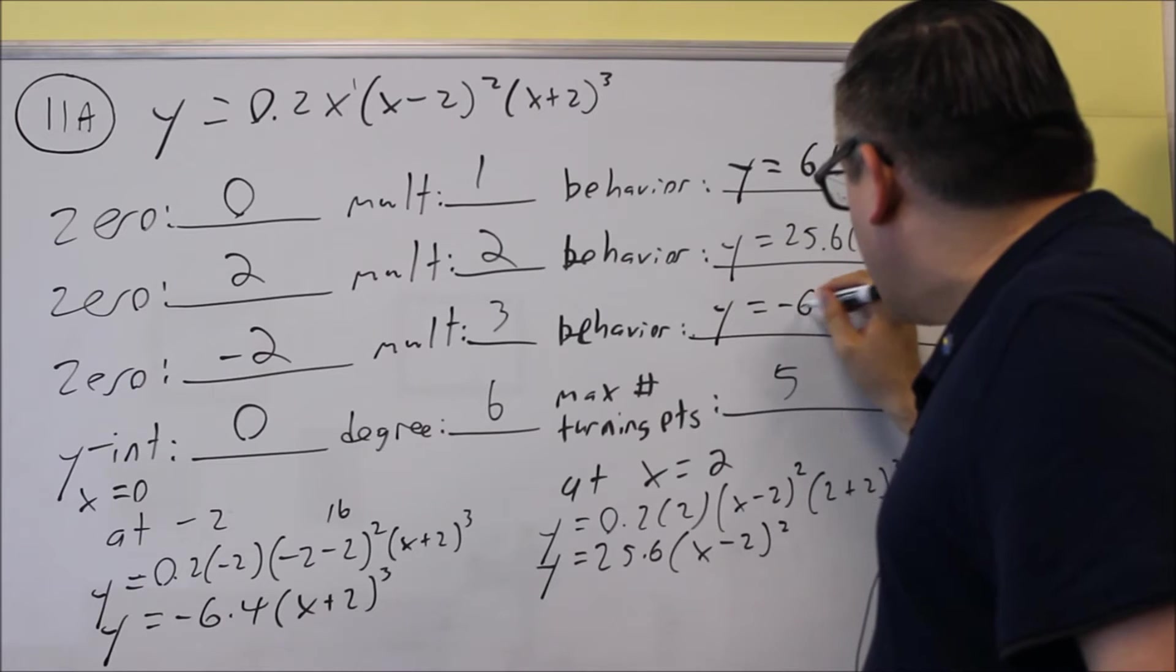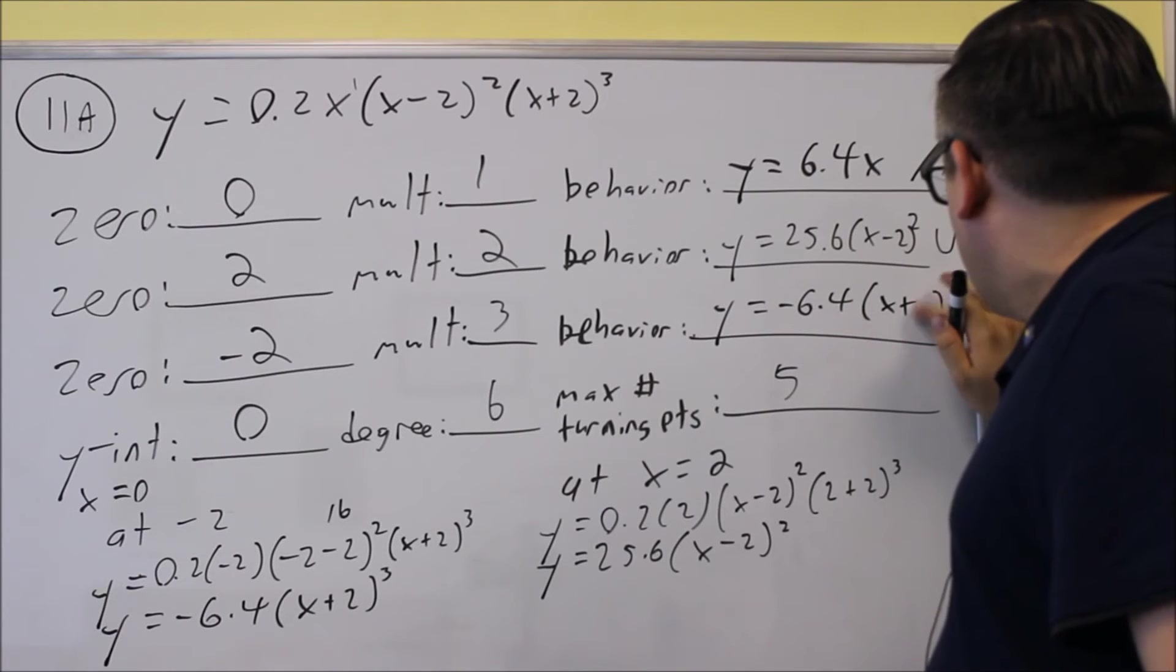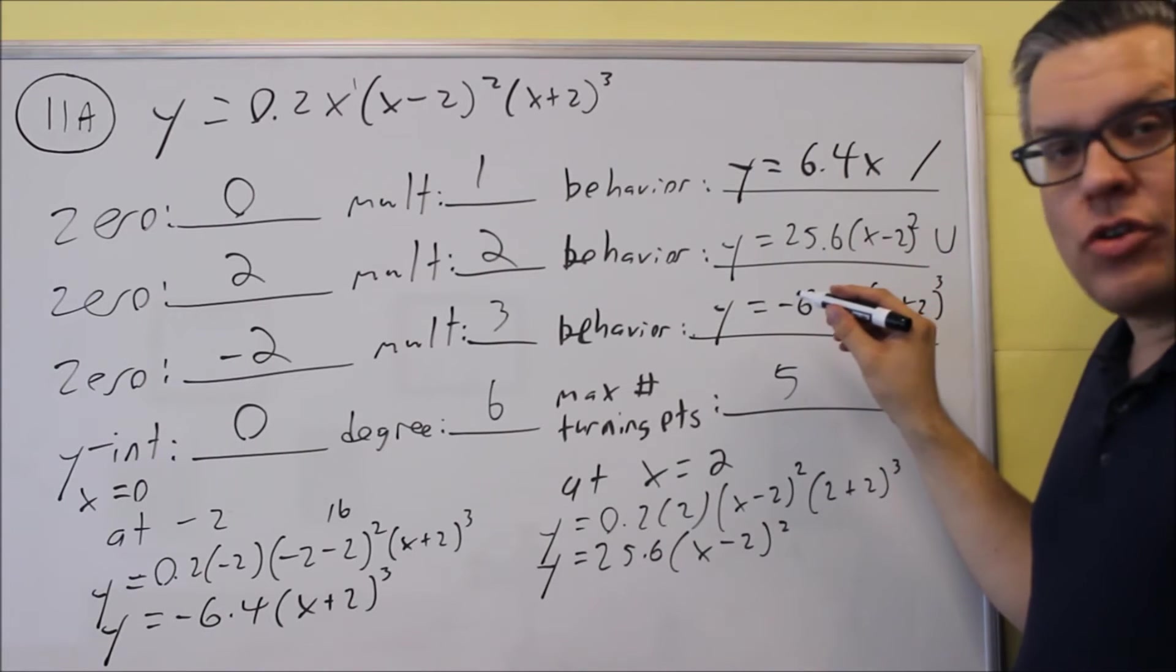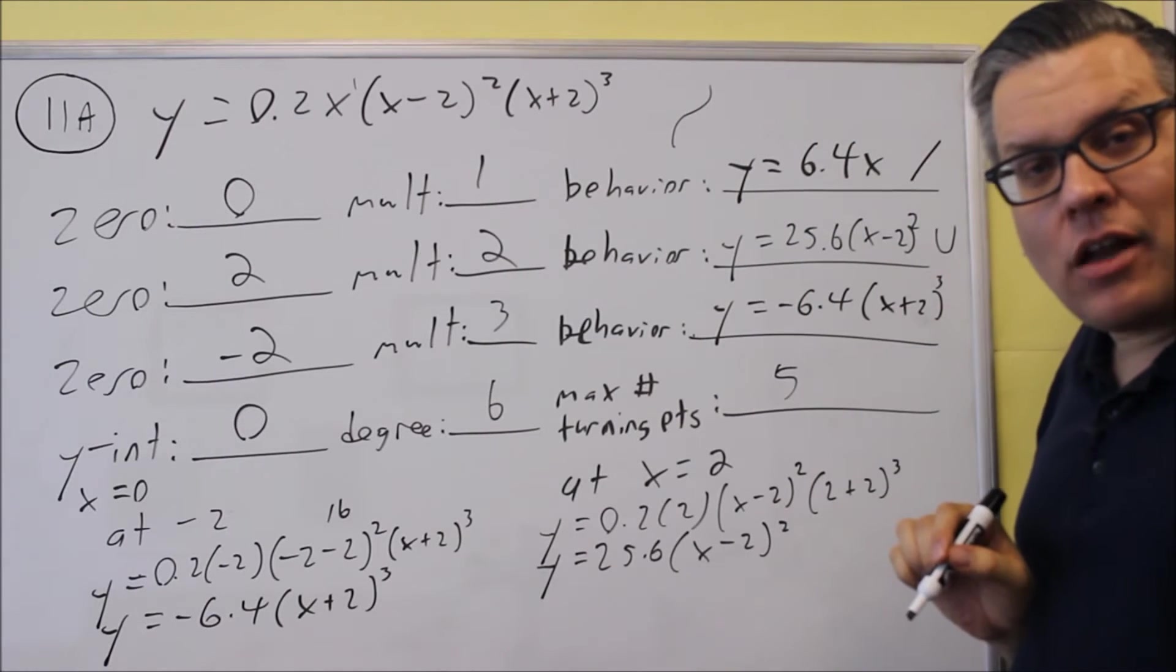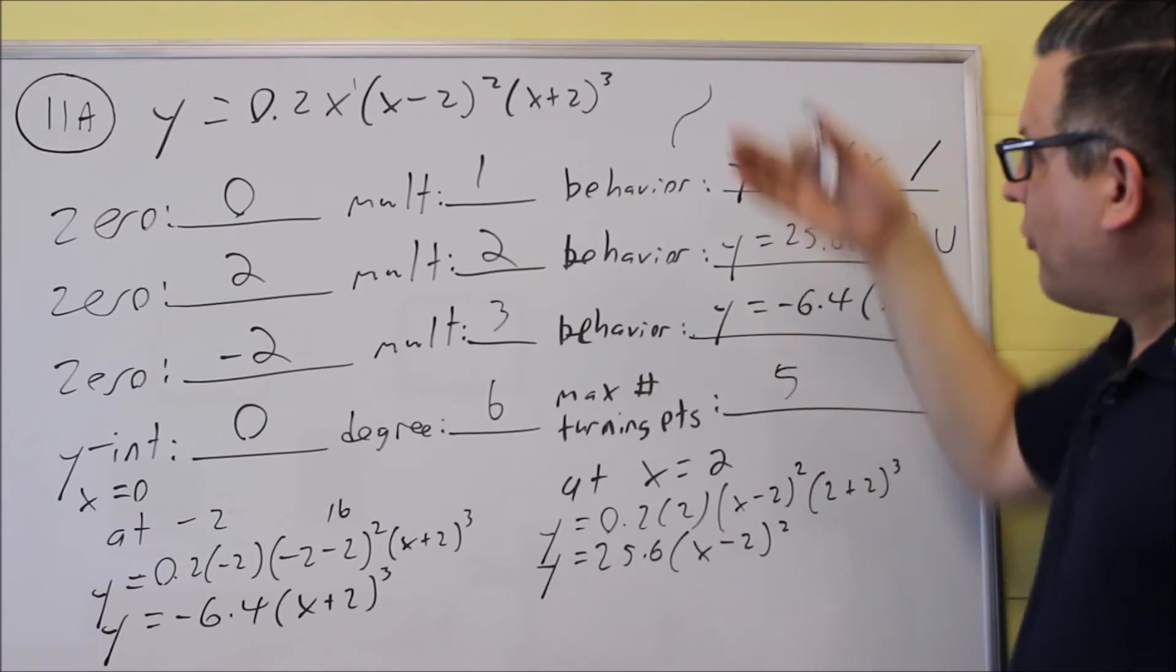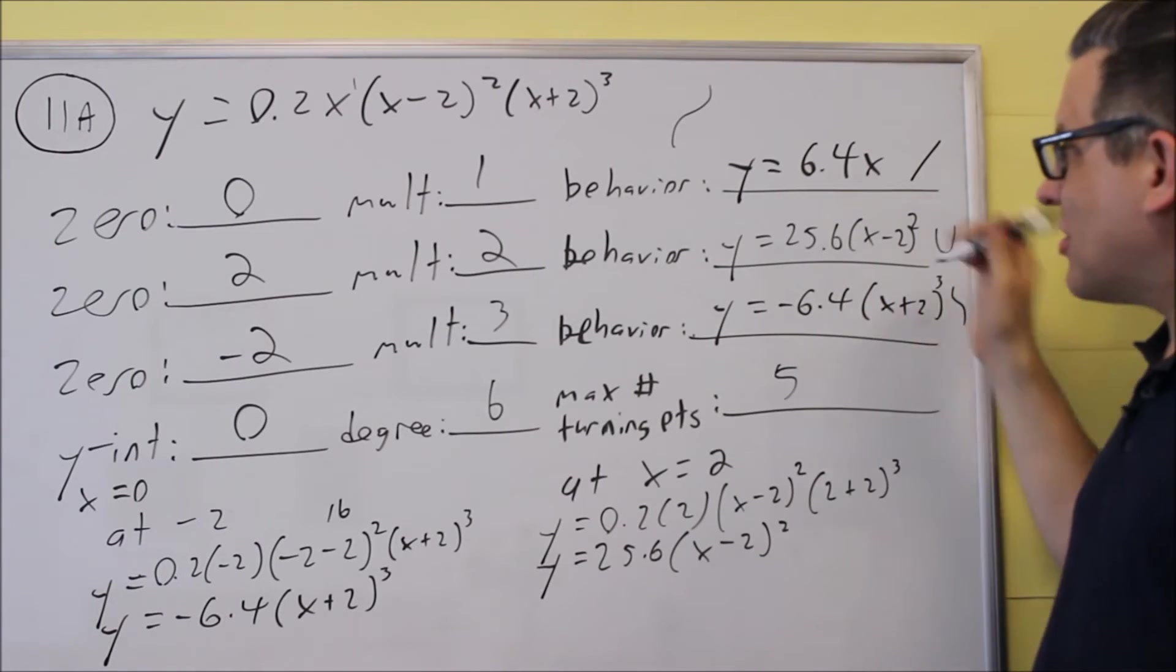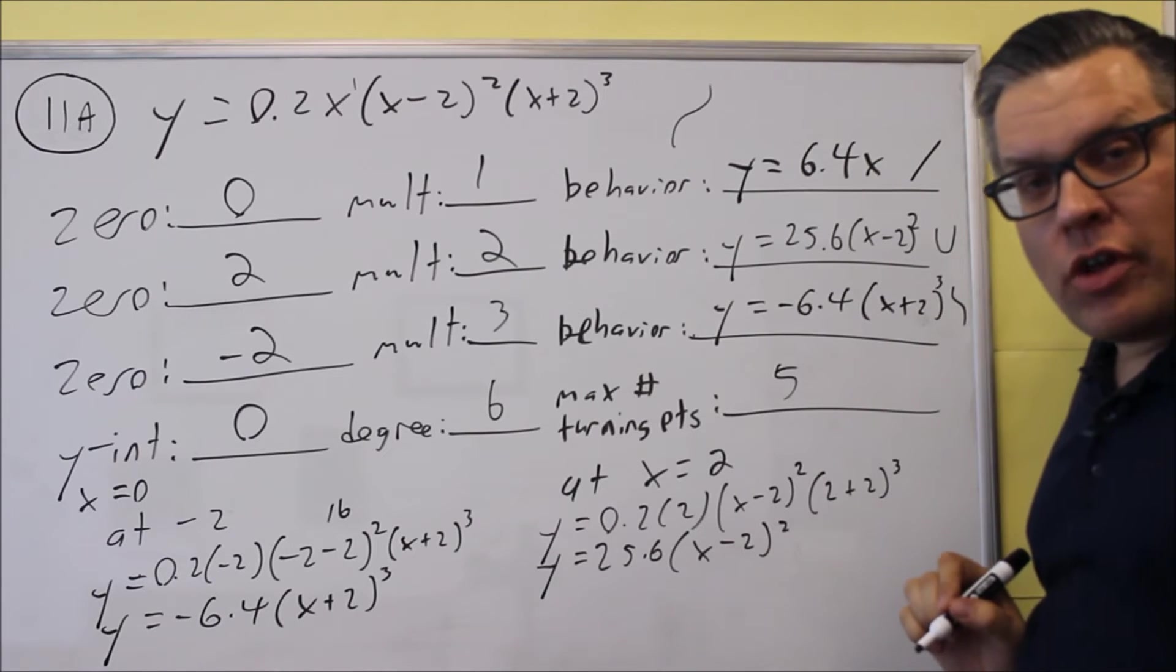So I get y is equal to negative 6.4 times (x+2) cubed. So we're going to think about what a negative cube is going to look like. Now I know a positive cube normally looks like that, but then I need to flip it because I have a negative in front. So if I flip that one, now it's going to look like this. So this is what it will look like on the end, it's this one flipped over, which will give you that one.